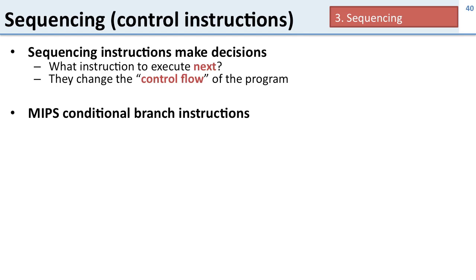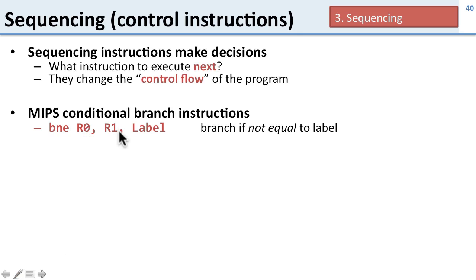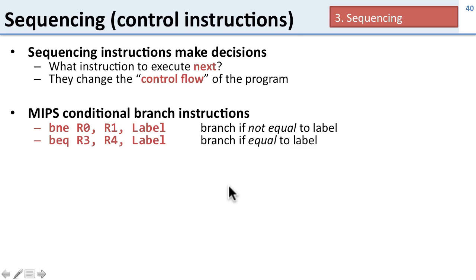MIPS has two conditional branch instructions. The first is BNE, or branch not equal. This instruction says that if register zero and register one are not equal, then the next instruction goes to this label address; if they are equal, execution continues to the next instruction. There's also branch equal, BEQ, which branches if the registers are equal. So if R3 and R4 are the same, we go to the label; otherwise we go on to the next instruction.